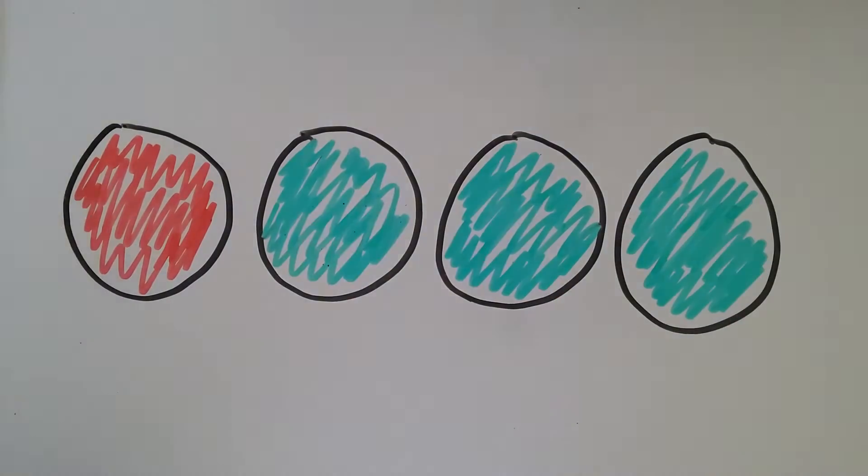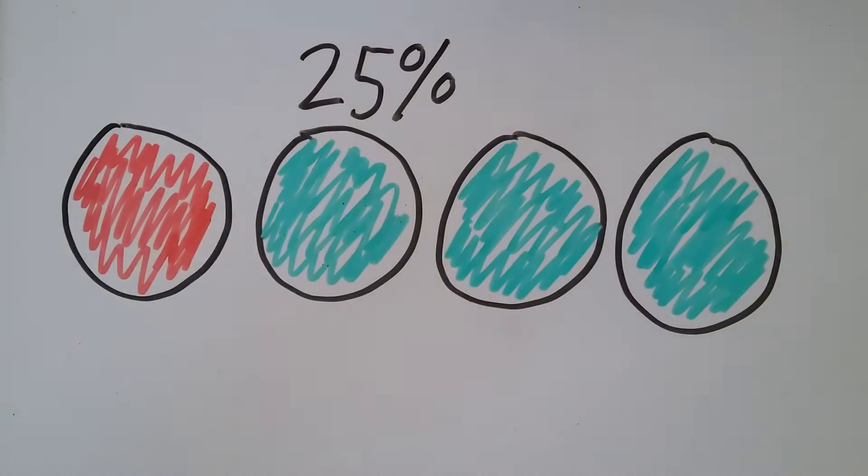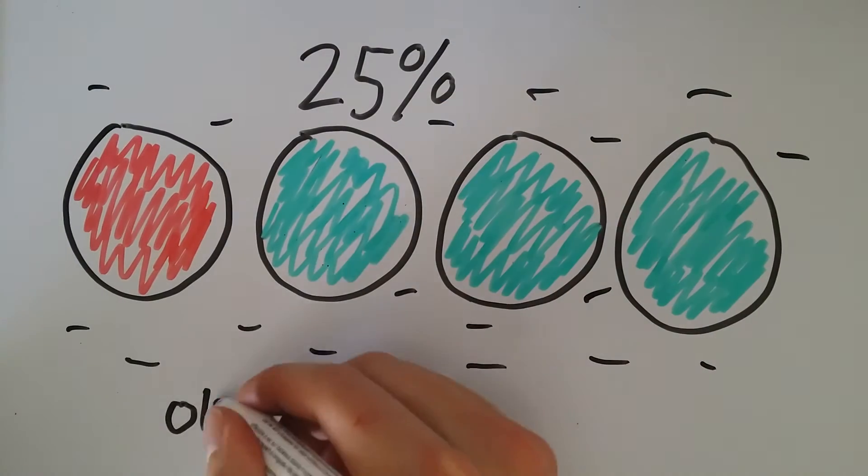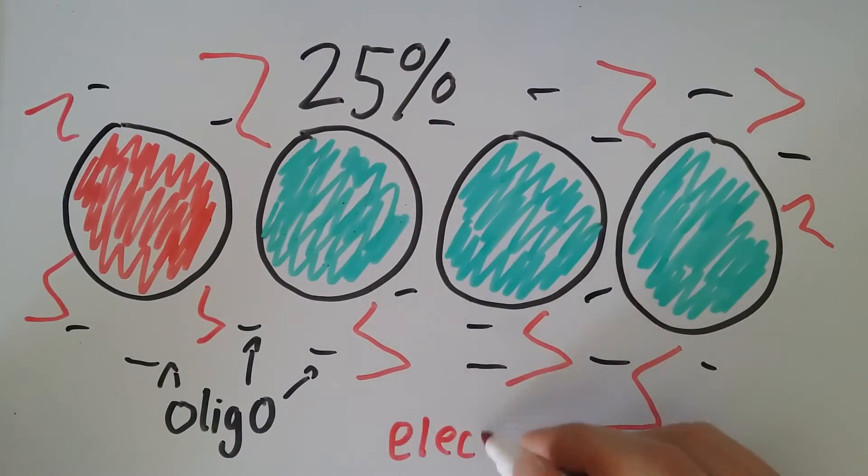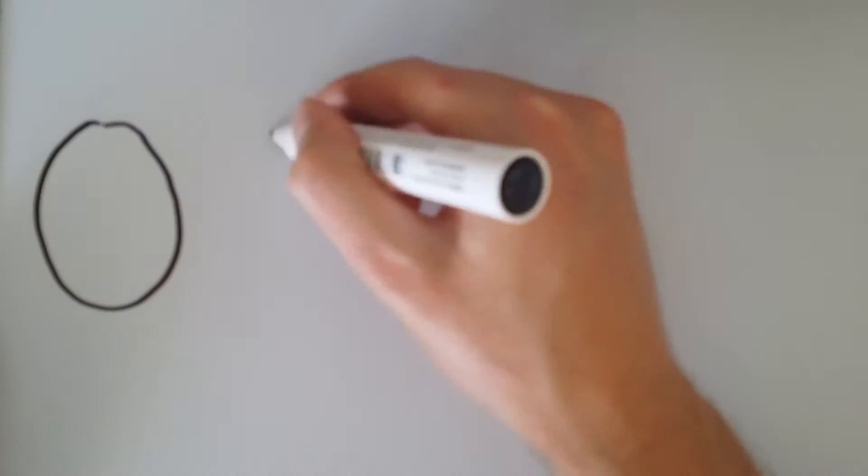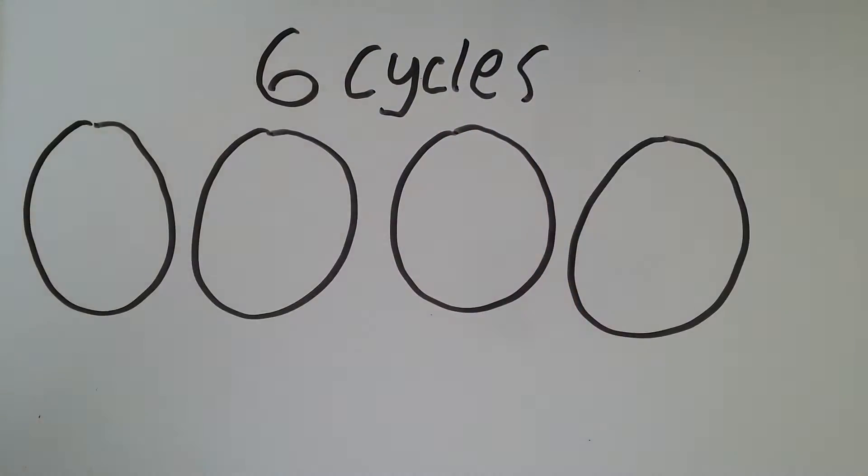However, if this same population is exposed to the oligo again, then a greater percentage of the population will have incorporated the change. It takes approximately 6 of these cycles to introduce the mutation to all the cells.